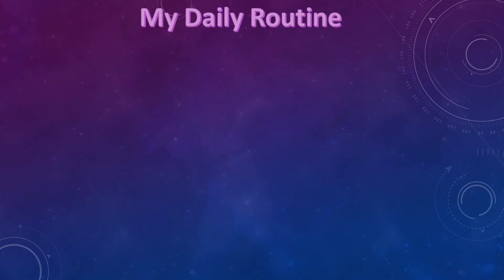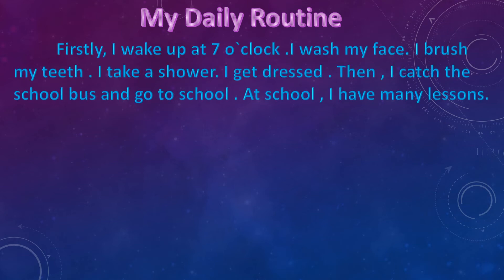The final version of my writing should be like this. First, as we said, we have to write the title: My Daily Routine. Then, the first paragraph: Firstly, I wake up at 7 o'clock. I wash my face. I brush my teeth. I take a shower. I get dressed. Then, I catch the school bus and go to school. At school, I have many lessons.